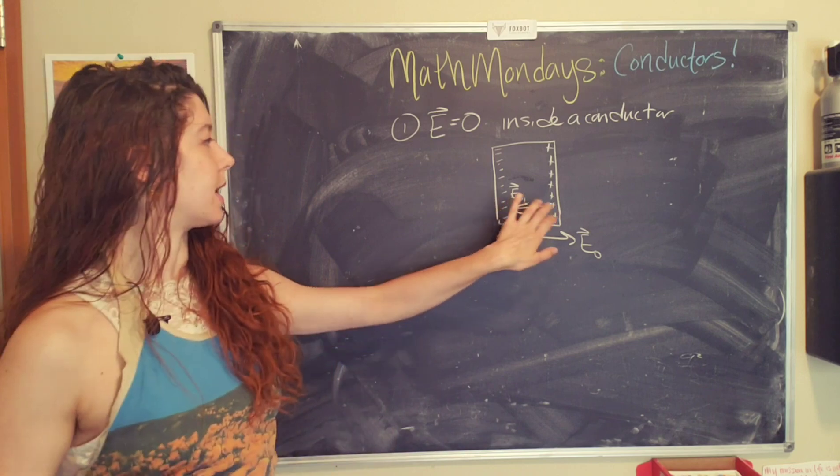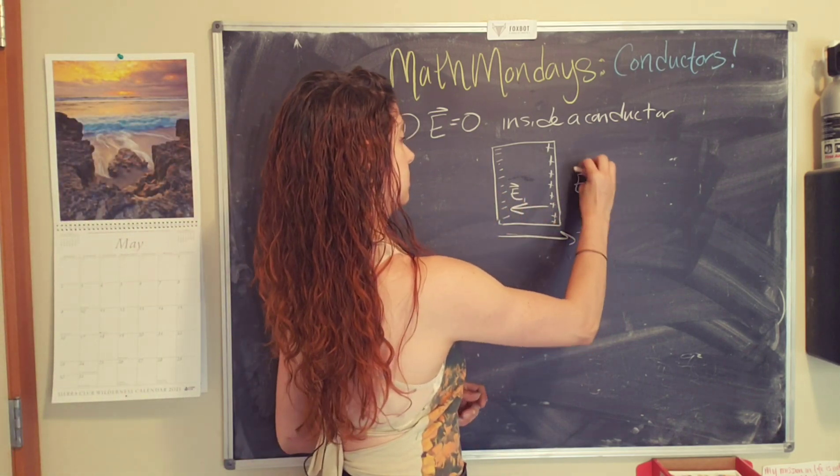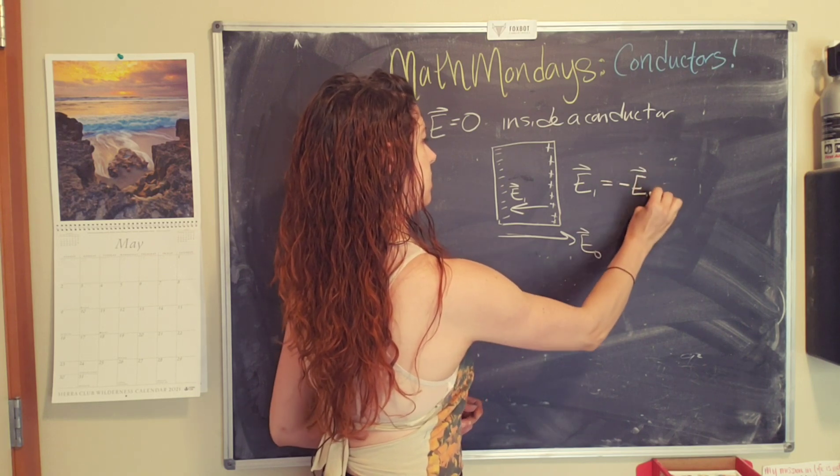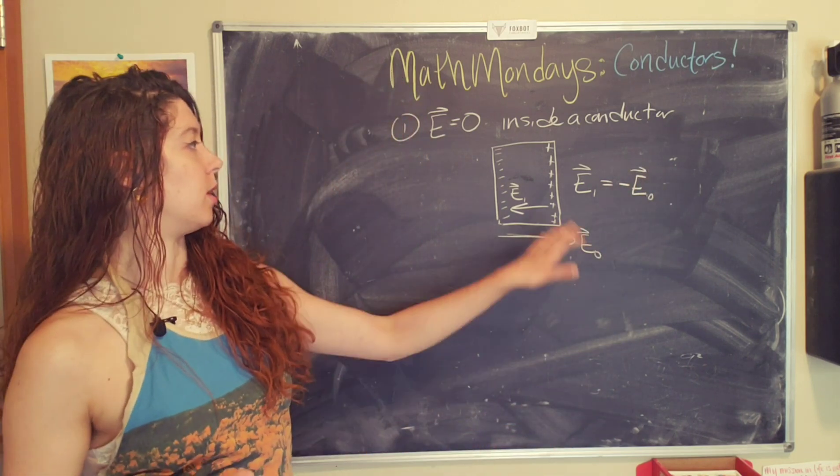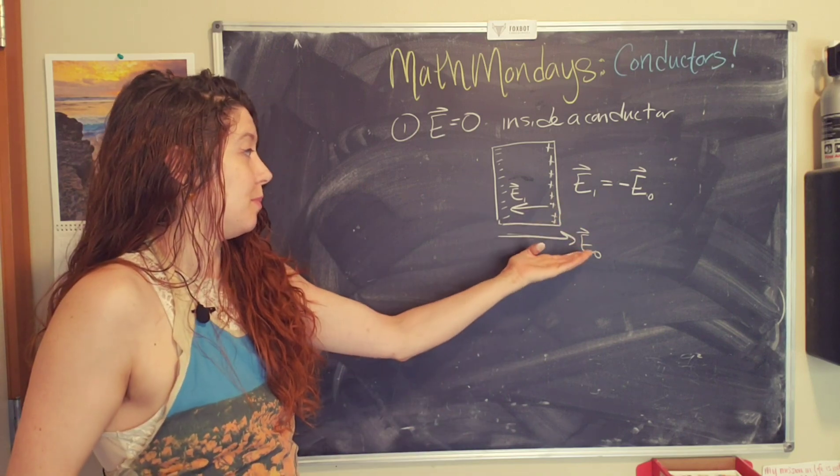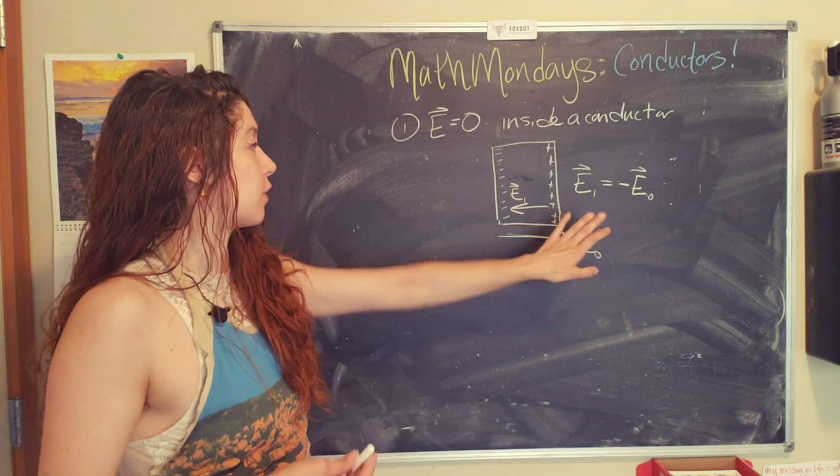And that's going to set up an internal electric field that is equal and opposite to this external one. And the reason why they keep flowing until it cancels is because, well, in the presence of an external electric field, the charges are going to necessarily be pushed by a force until it cancels out.